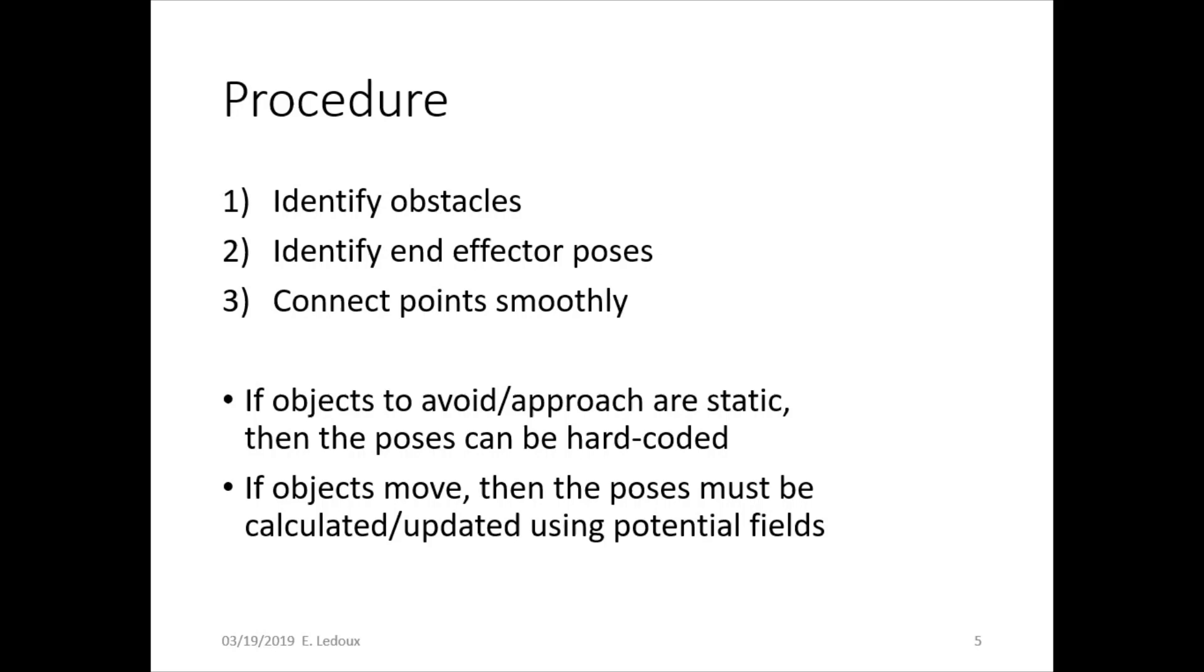Then identify the end effector poses. So what position and orientation does the end effector of the robot need to be at in order that it's moving from one spot to another correctly, and in order that the rest of its arm won't hit obstacles that are in the way.